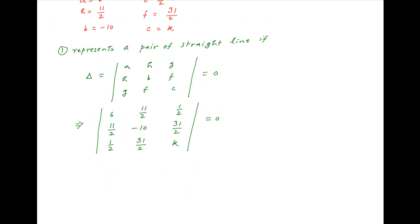Now take 1/2 common from each of the 3 rows. We get (1/8) times the determinant with rows (12, 11, 1), (11, −20, 31), and (1, 31, 2k) equal to 0.